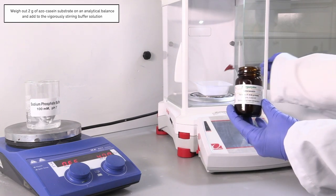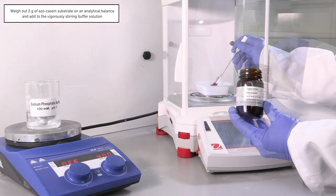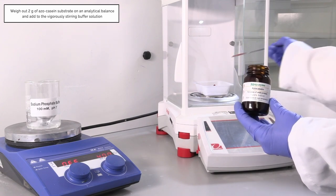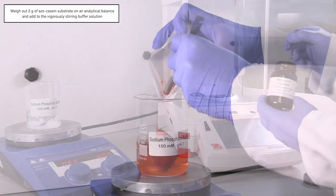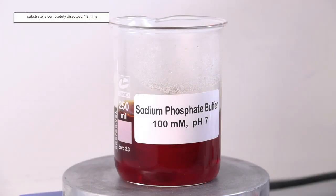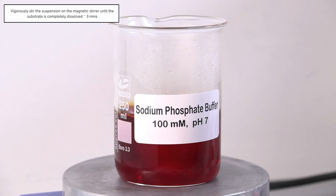Weigh out 2 grams of azo casein substrate on an analytical balance and add to the vigorously stirring buffer solution. Vigorously stir the suspension on the magnetic stirrer until the substrate is completely dissolved, approximately 3 minutes.